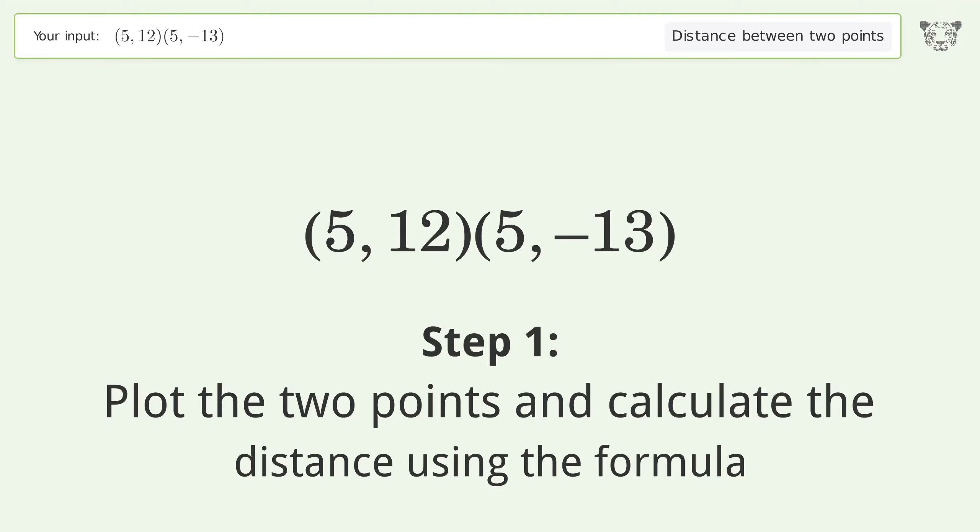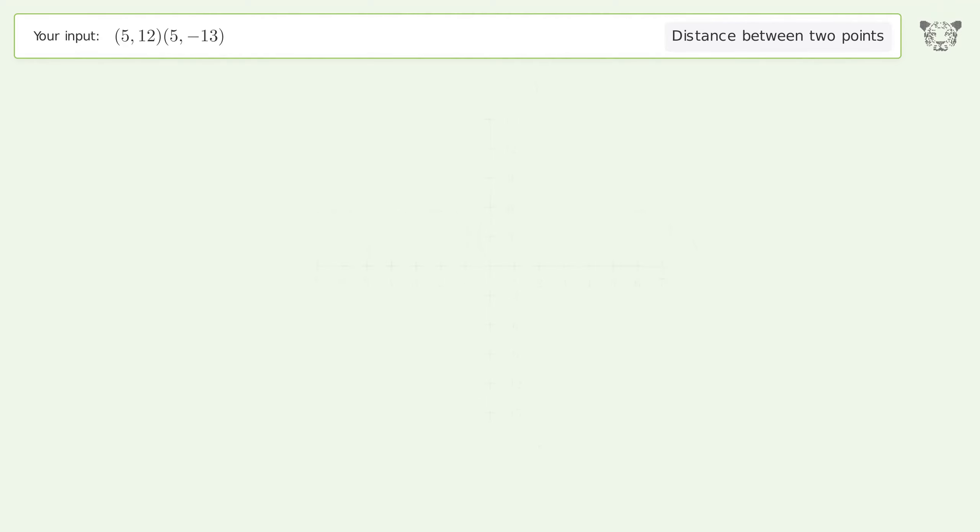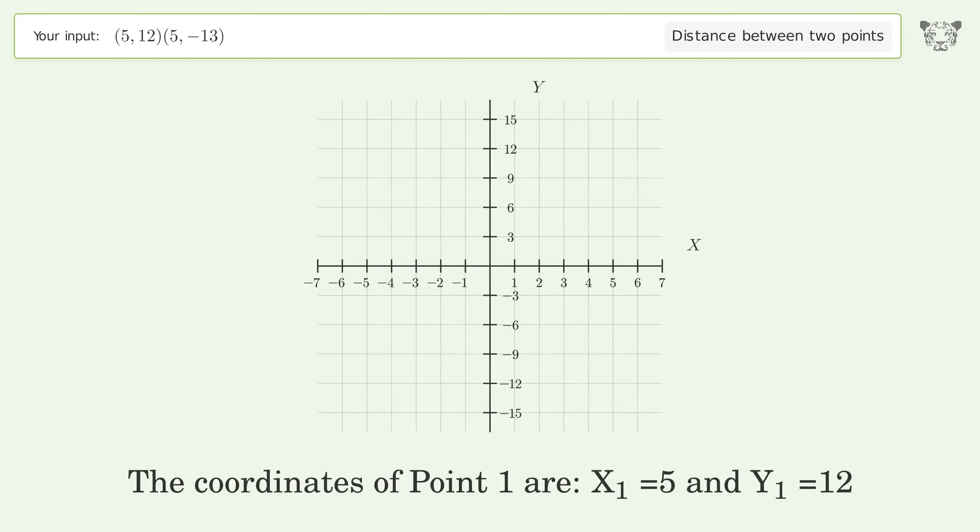The coordinates of point 1 are x1 equals 5 and y1 equals 12. The coordinates of point 2 are x2 equals 5 and y2 equals negative 13.